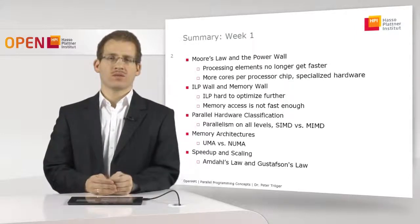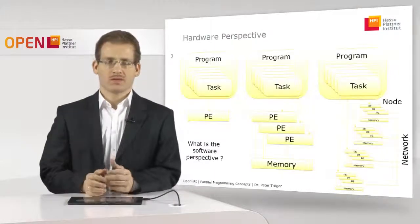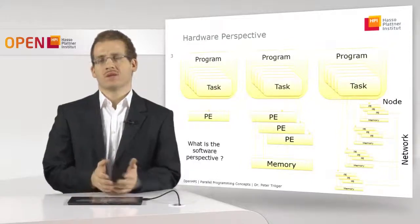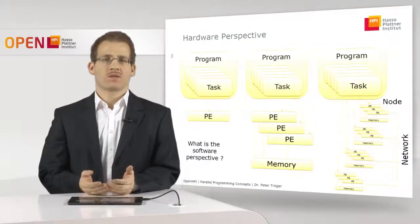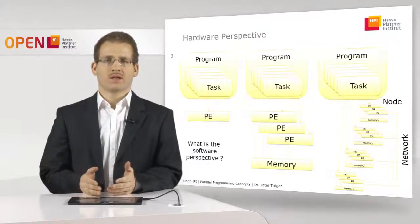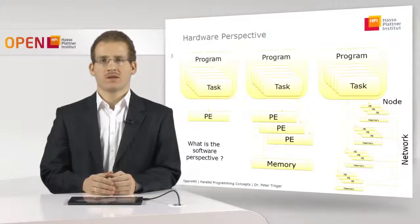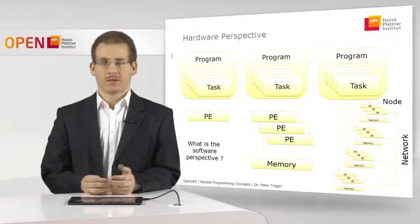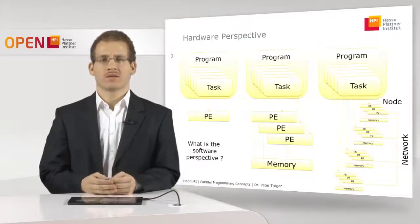In this second week we will continue by taking a different view on the same problem. We take the hardware view from last week — different processing elements attached to shared memory or working in a shared-nothing environment — and now ask ourselves what is the software perspective on such a system. That means starting from the operating system as the lowest level of software and stepping through layers like middleware and application logic to ask how parallel hardware can be exploited to gather speedup.